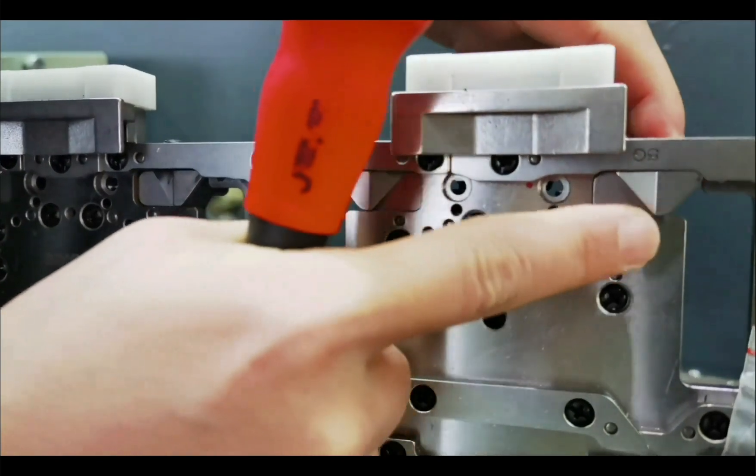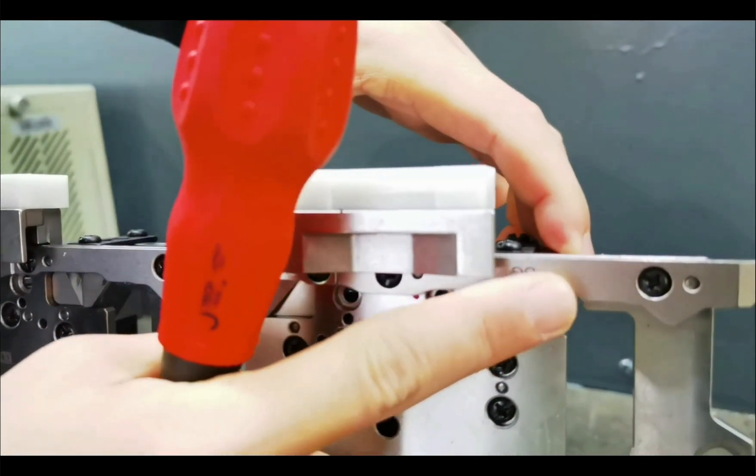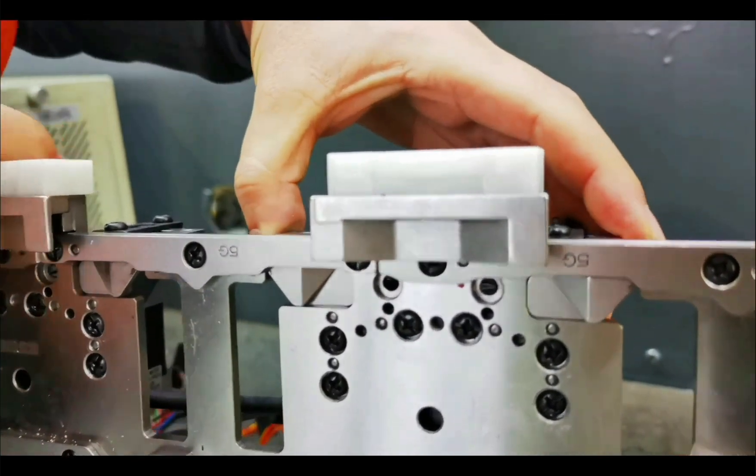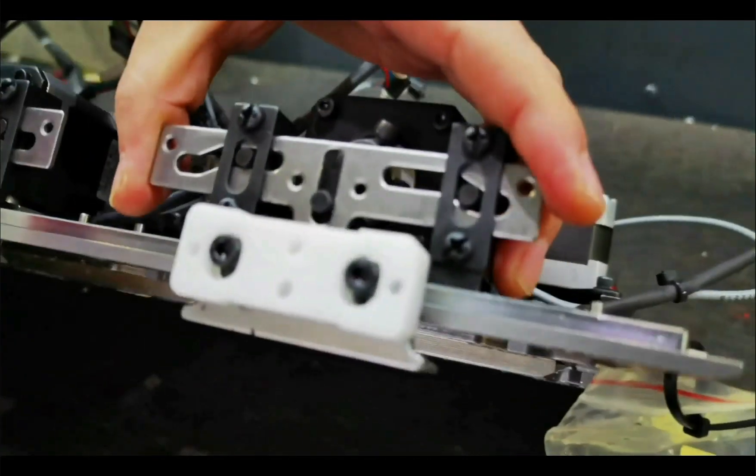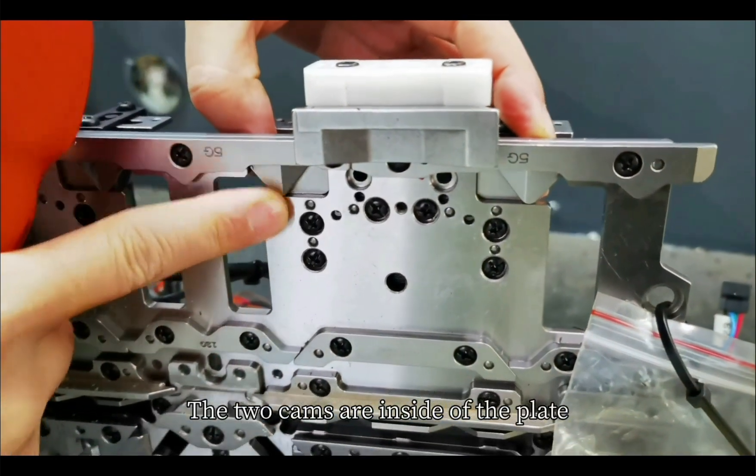Keep the carriage up and down. At the bottom position, the two cams are inside of the plate.